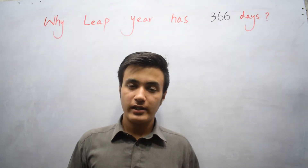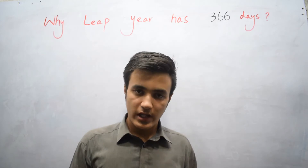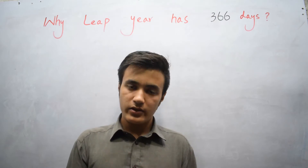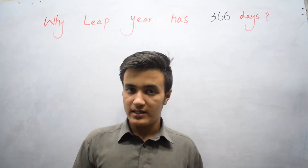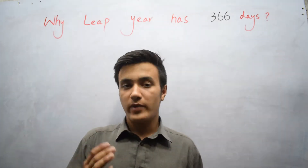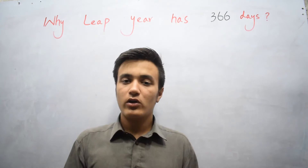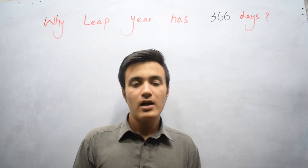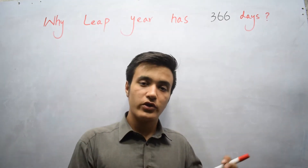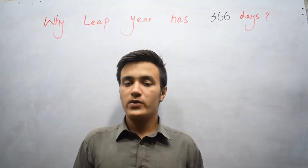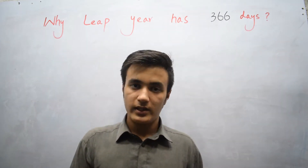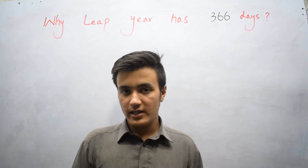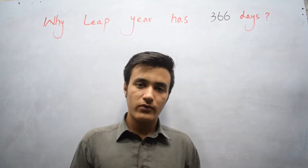Let's talk about why a leap year has 366 days. A leap year is a year that consists of 366 days. 'Leap' also means jumping — from a normal year's 365 days, it jumps to 366 days. You can observe this in the month of February: in a leap year, February consists of 29 days, while in other years it consists of 28 days.